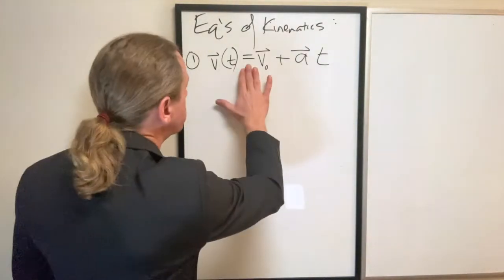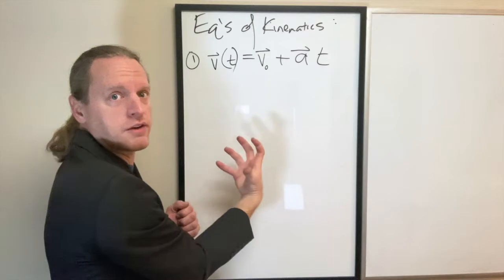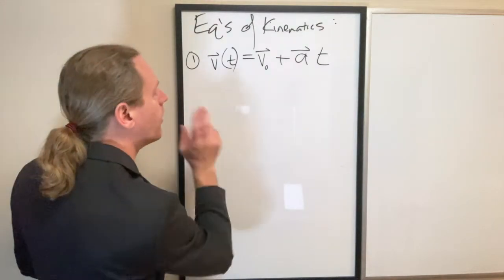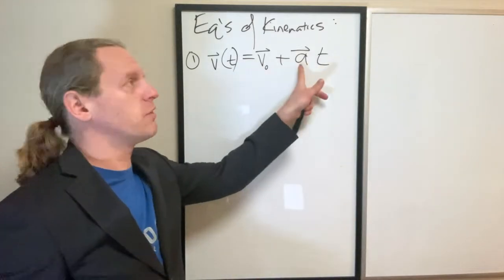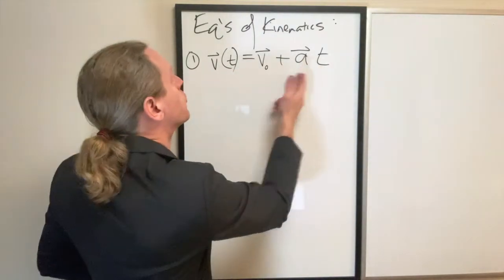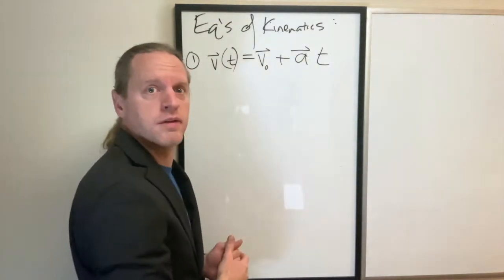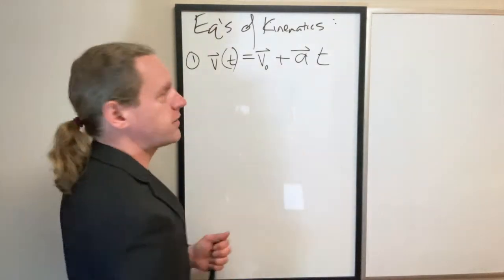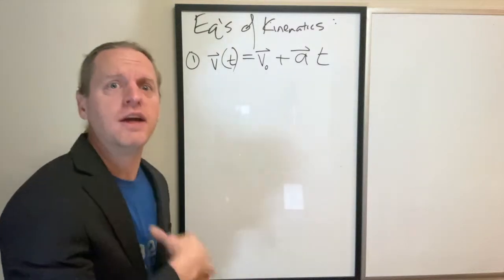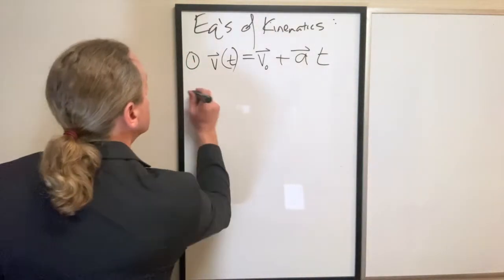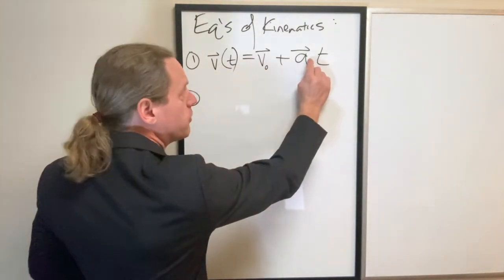This equation comes from our definition of velocity, and specifically when we define velocity... Oh, no, I'm sorry, I take that back. This equation comes from our definition of acceleration, the derivative of velocity. And when you integrate acceleration over time, you get this equation here. So that's left as a proof to the reader, but it's essentially the same thing as I drew up just previously with the connection between displacement and velocity.